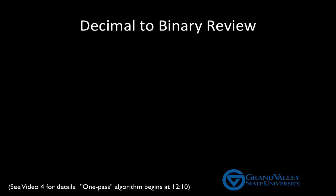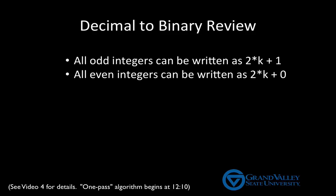This technique leverages three facts. All odd integers can be written as 2 times k plus 1. All even integers can be written as 2 times k plus 0. And multiplying a binary number by 2 adds a 0 to the end in the same way that multiplying a decimal number by 10 adds a 0 to the end.